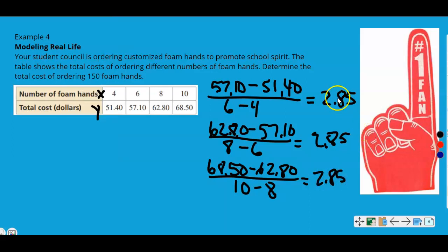Parentheses. We've got 68.50 minus 62.80. And 10 minus 8 again is divided by 2. And that one is 2.85 as well. So we got 2.85 for the slope or the rate of change for each one of those. So that's what we want. So now that we can determine that this is linear because the rate of change is constant through all four of the examples given in the table.